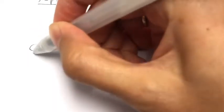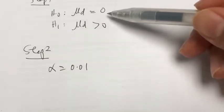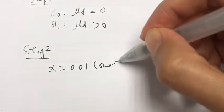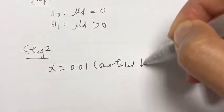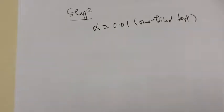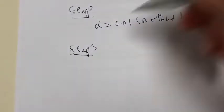Step two: we write our alpha, which is 1%. And is this a one-tailed or two-tailed test? Yes, it's a one-tailed test, because the sign for the alternate hypothesis points to a particular direction. Now let's calculate the test statistic.